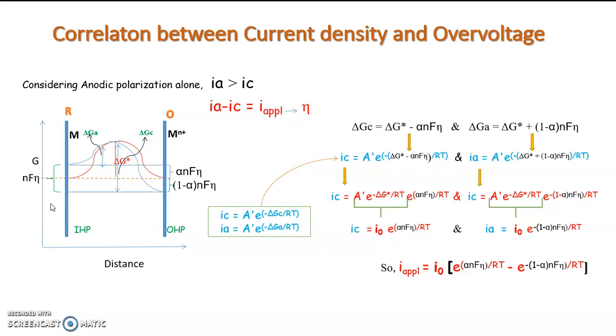Here, we have to understand this much: that we are dividing the total overvoltage equally to both the anodic part and the cathodic part. That is, we are assuming that the symmetry factor alpha equal to 0.5 or 50 percent. That is, alpha plus 1 minus alpha will be the 100 percent.